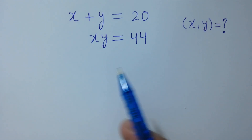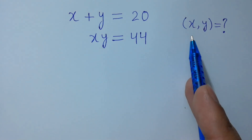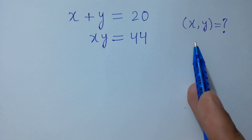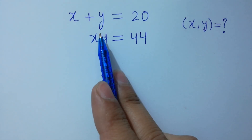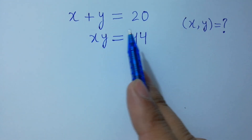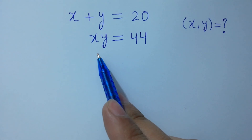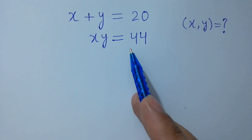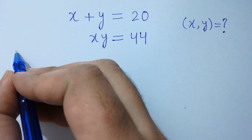Hello friends. Find the value of x and y if x plus y equals 20 and x times y equals 44. Let's have a solution.